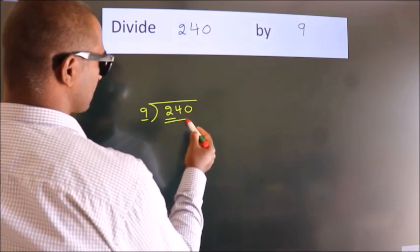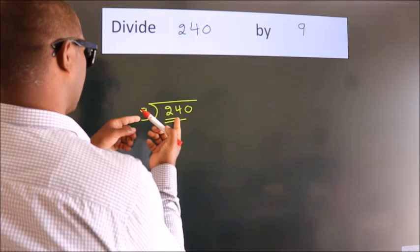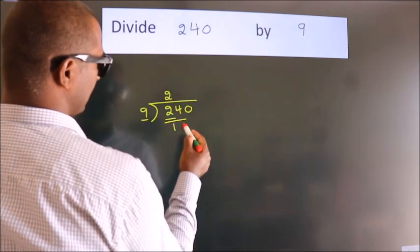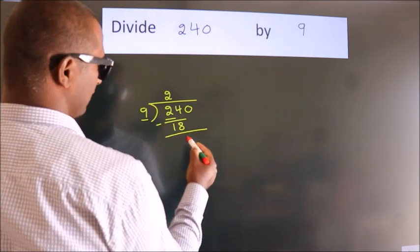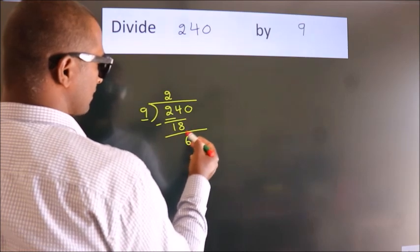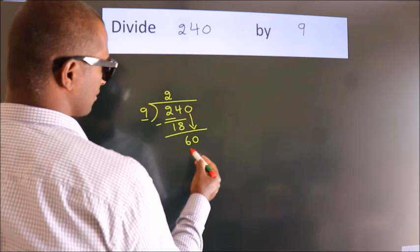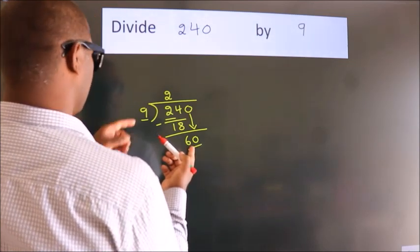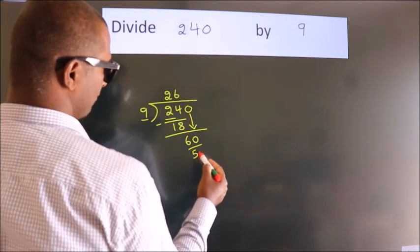A number close to 24 in the 9 table is 9 times 2 equals 18. Now we should subtract, we get 6. After this, bring down the beside number, so zero down, so 60. A number close to 60 in the 9 table is 9 times 6 equals 54.